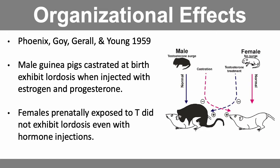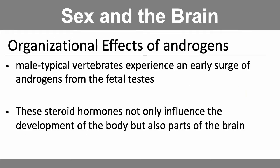This illustration shows both the organizational effects of hormones given or taken away during early development, and also the activational effects of injecting these hormones later in life to exhibit an atypical response for their sex. In general, specific to sex steroids — estrogens and androgens — male-typical vertebrates experience an early surge of androgens from the fetal testes. This also happens in utero or in ovo, depending on what class you are — you don't gestate inside a uterus if you're a bird; you gestate inside an egg.